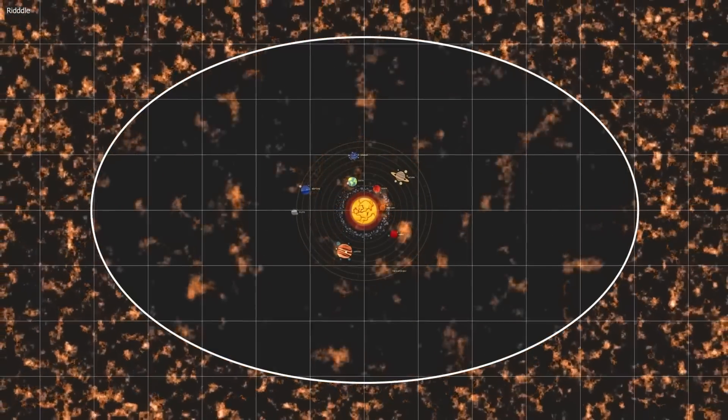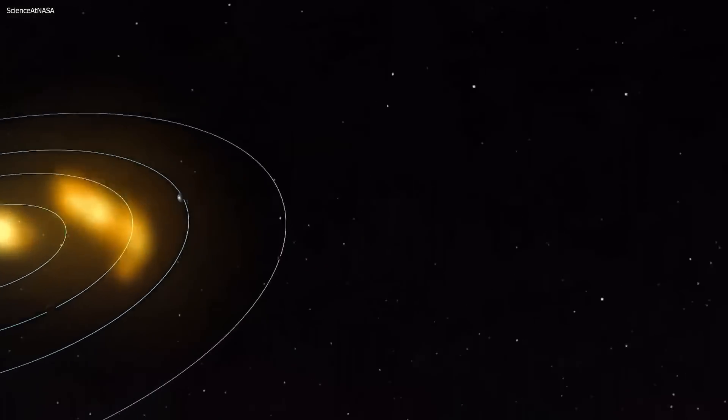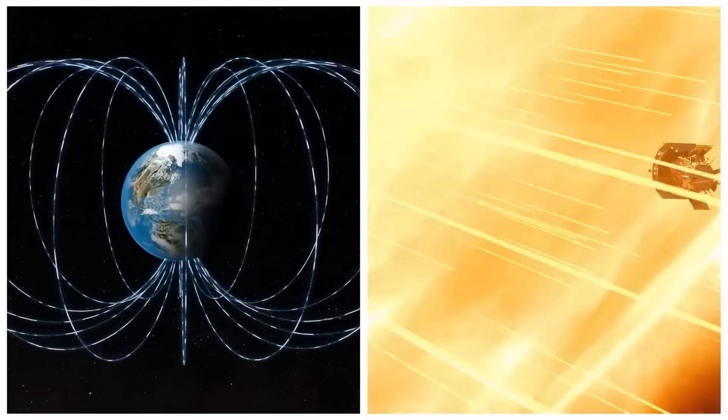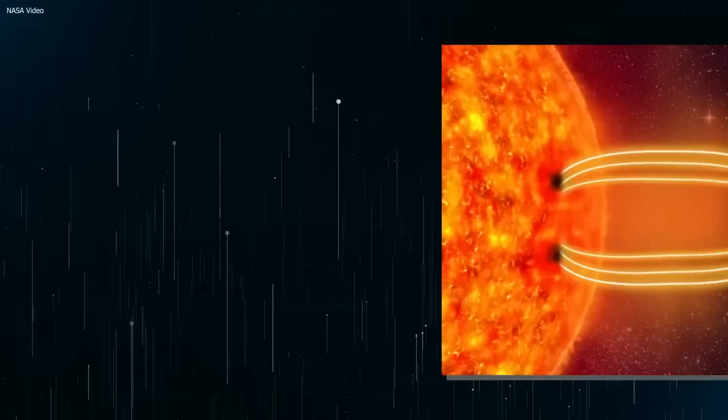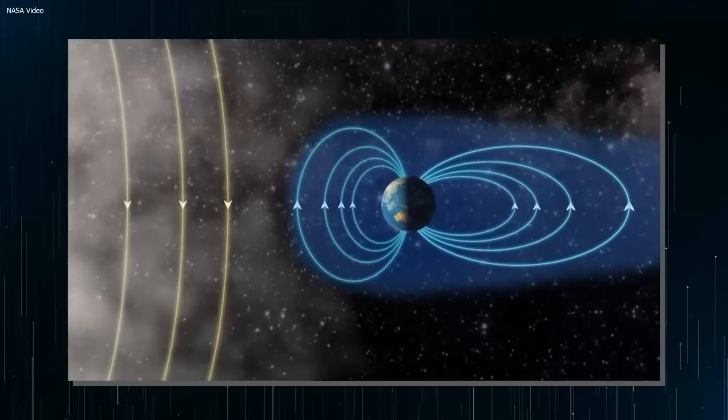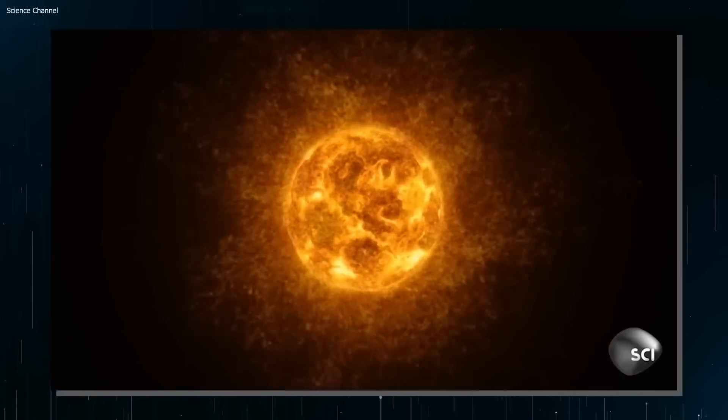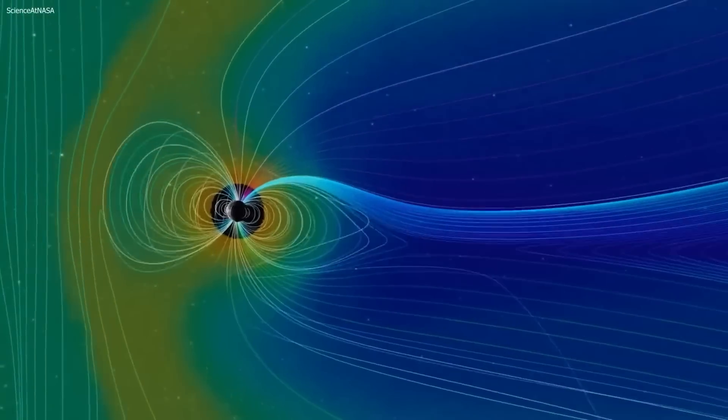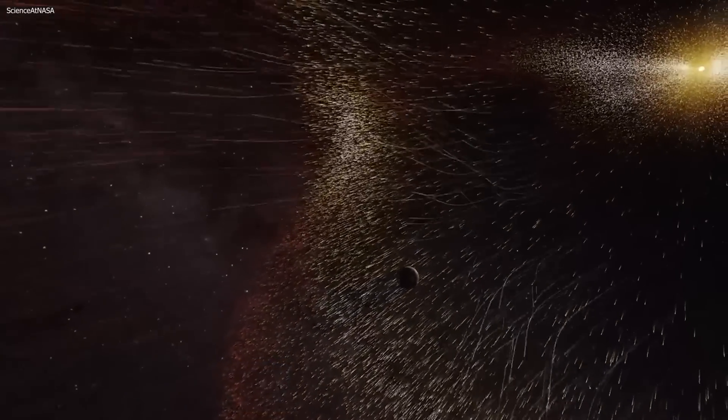The heliopause is not a static boundary, but rather a dynamic one that changes shape in response to the varying pressure of the solar wind and the interstellar medium. The solar wind travels at supersonic speeds and creates a shockwave at the edge of the heliosphere. The heliopause is an important boundary to study because it helps us understand the dynamics of the solar wind and provides important insights into the structure and properties of the interstellar medium and the galactic environment.